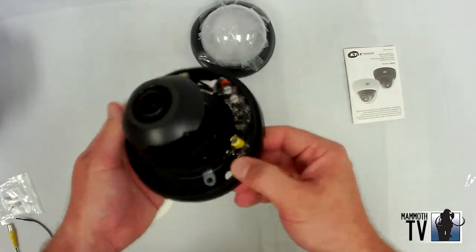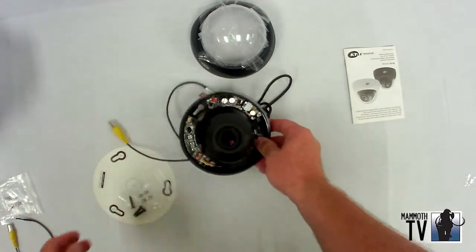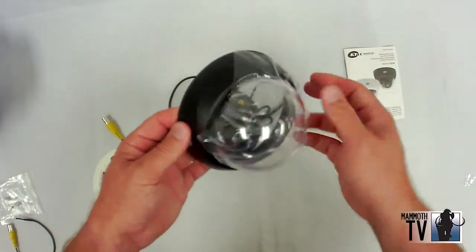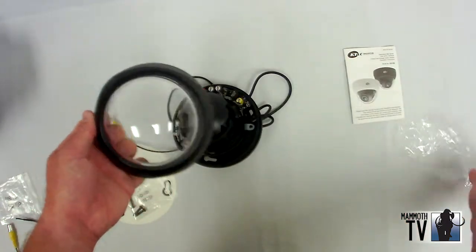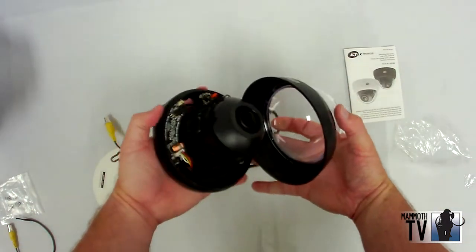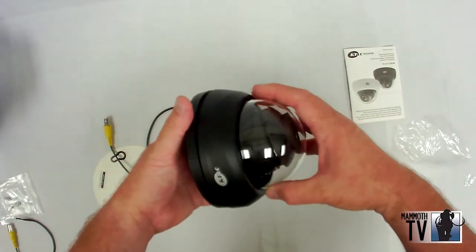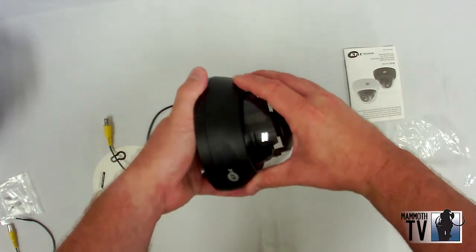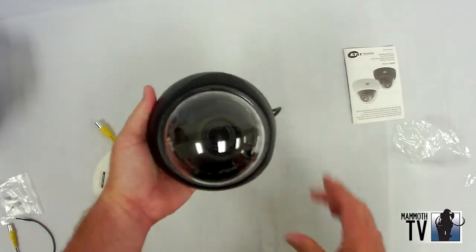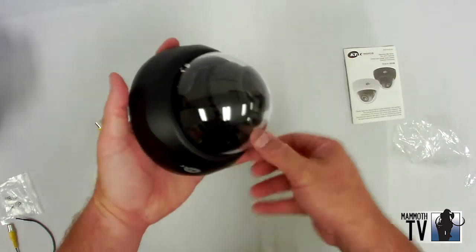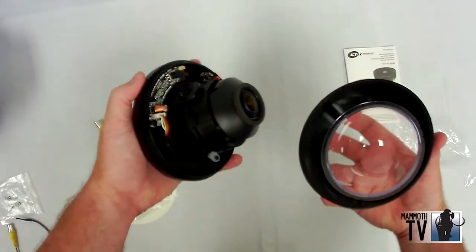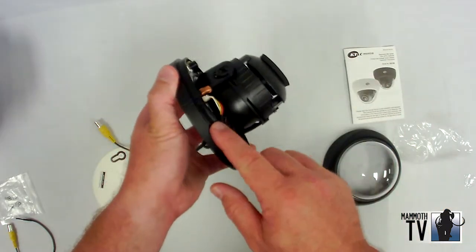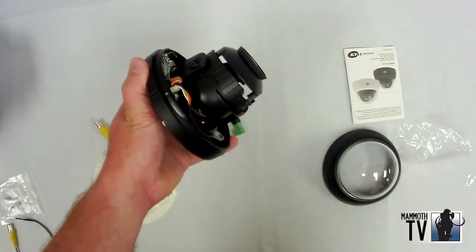Once that's back on and you adjust the lens, you can go ahead and put the top on. The top just clicks into place like so. It makes it really easy to open and close because there's a little groove there that clicks into the spot.